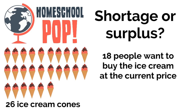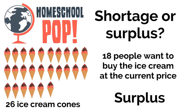Our last example is an ice cream shop — tasty! Let's say there are 26 ice cream cones available for sale, and there are 18 people who want to buy the ice cream at the current price. Interesting situation: 26 ice cream cones, 18 people who are interested in them. Is there a shortage or a surplus of ice cream cones? Yeah, a surplus. There are too many ice cream cones to sell, and the ice cream shop might need to lower their prices so more people are willing to buy, and there won't be a surplus — because guess what? The ice cream's gonna melt.